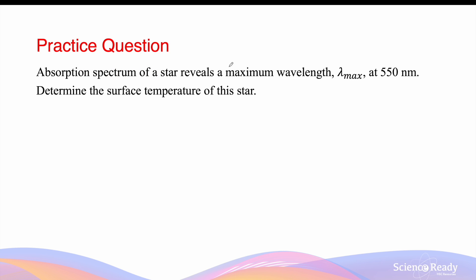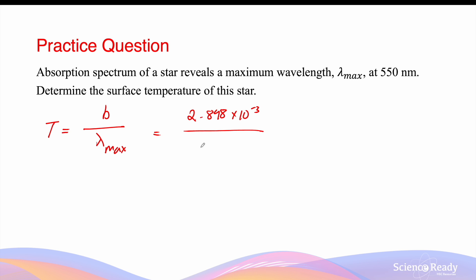The absorption spectrum of a star reveals a peak wavelength, lambda max, of 550 nanometers. To determine the surface temperature: T equals Wien's constant (2.898 × 10⁻³) divided by the peak wavelength (550 nm, converted to meters by multiplying by 10⁻⁹). This gives 5269 kelvins. The temperature calculated from Wien's law will always be in kelvins — if calculating peak wavelength from temperature, ensure you use kelvins, not degrees Celsius.